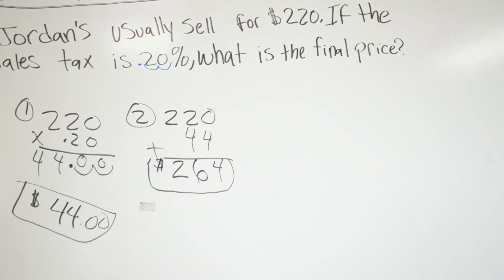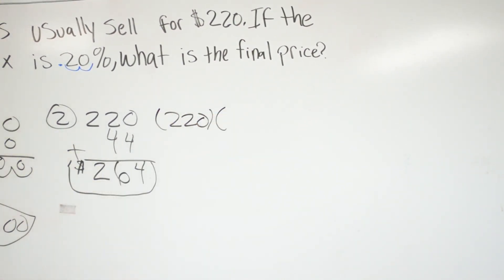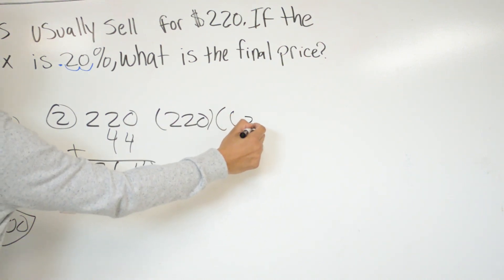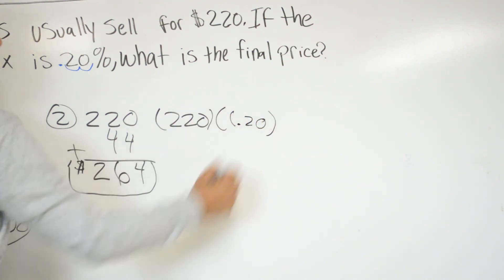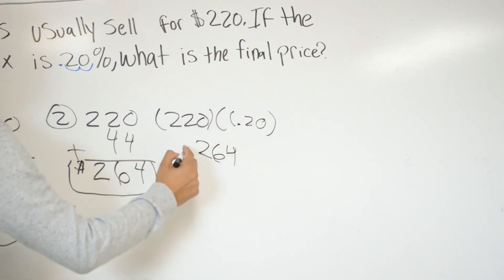Step 2 is finding the final price. We add $220 plus the $44 tax: 4 plus 0 is 4, 4 plus 2 is 6, bring down the 2 — so in total, if you want those $220 Jordans and the sales tax is 20%, you're paying $264. The second method: multiply 220 by 120%, or 1.20, since tax is added. That also gives you $264.